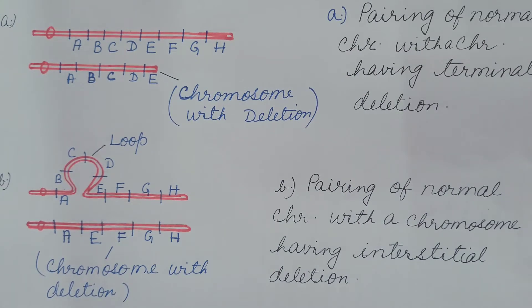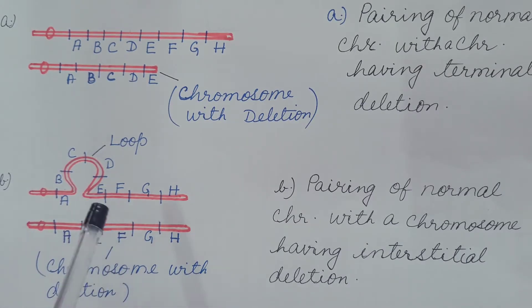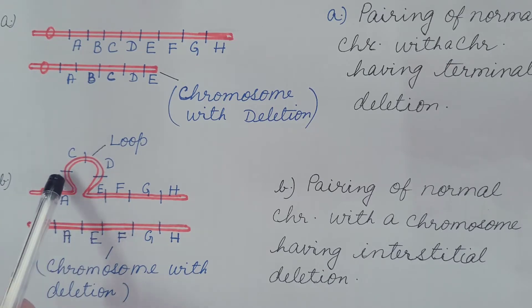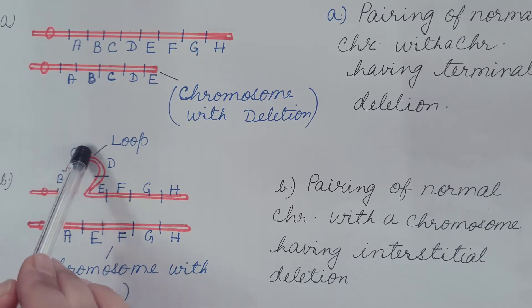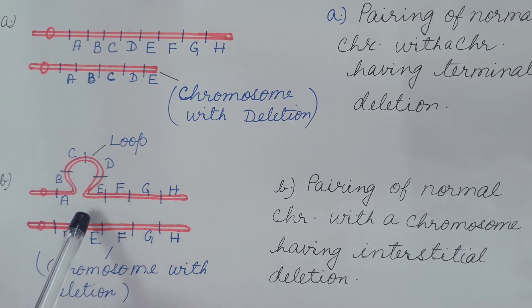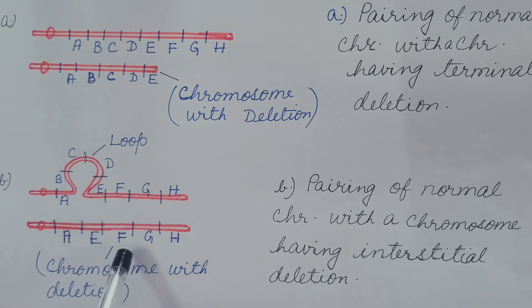In interstitial deletion, the normal chromosome has genes A, B, C, D, E, F, G, H, and the chromosome with deletion has the segment B, C, D deleted. During pairing, A pairs with A, E pairs with E, and so on. But the B, C, D region in the normal chromosome does not have a counterpart in the deleted homolog. Hence, it remains unpaired and loops out during pairing of the homologous chromosomes.